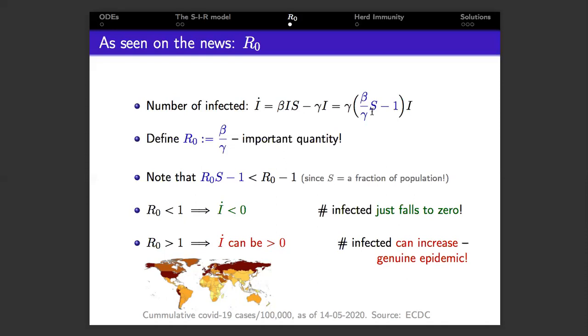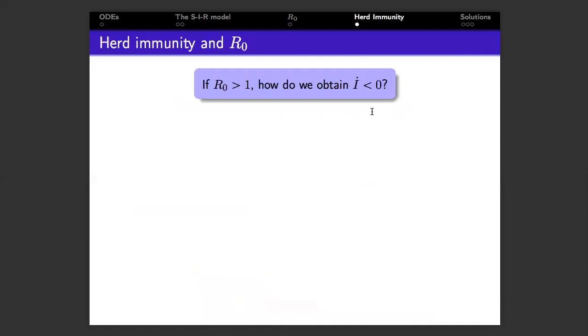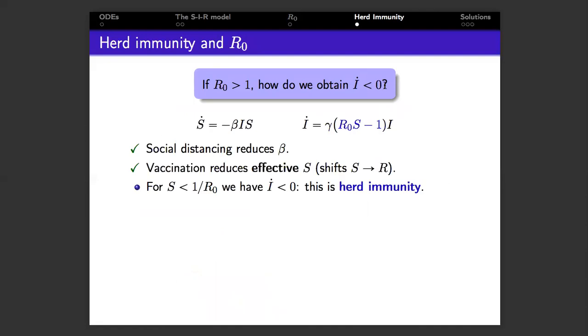How do we force the number of infections to go down? How do we end the epidemic? How do we make I dot negative? Well, social distancing, as we're currently experiencing, reduces the number beta in our equations, and therefore it reduces R₀.